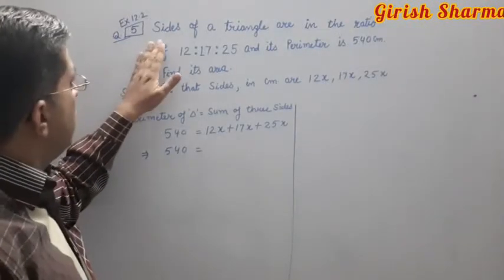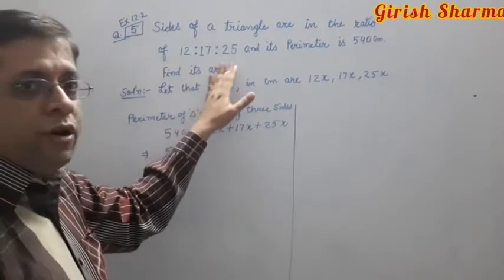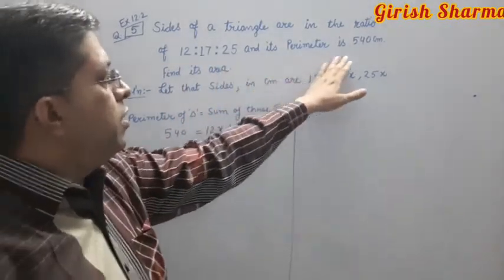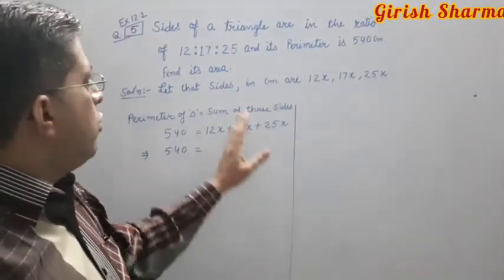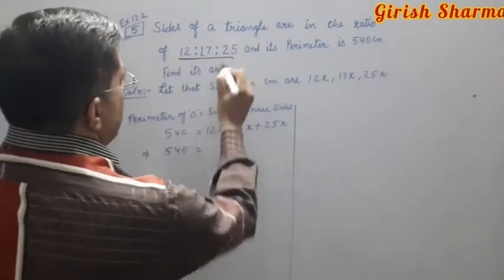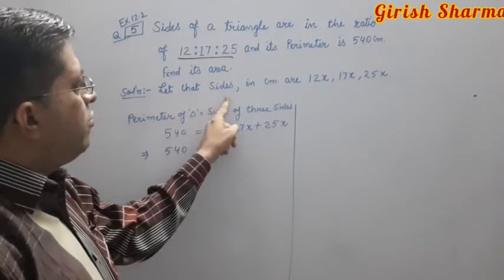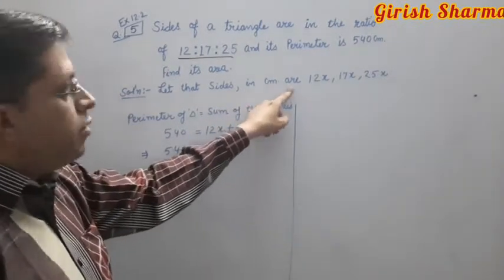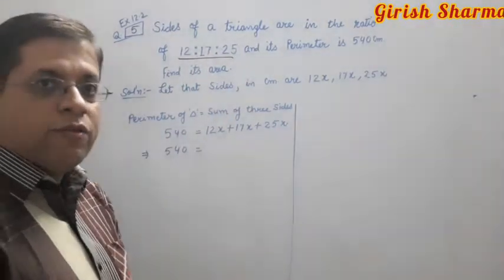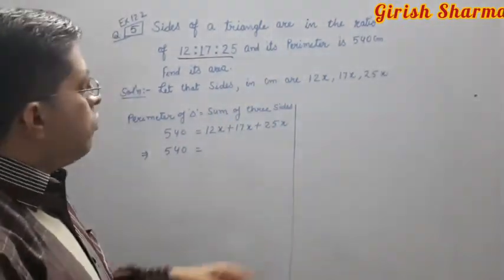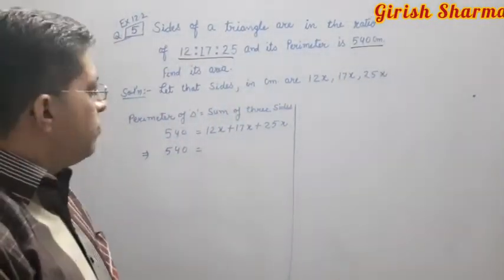The next question: sides of a triangle are in the ratio of 12, 17, and 25, and its perimeter is 540 centimeters. Find its area. First, because sides are given in ratio, convert into actual sides. Let the sides in centimeters be 12x, 17x, and 25x.